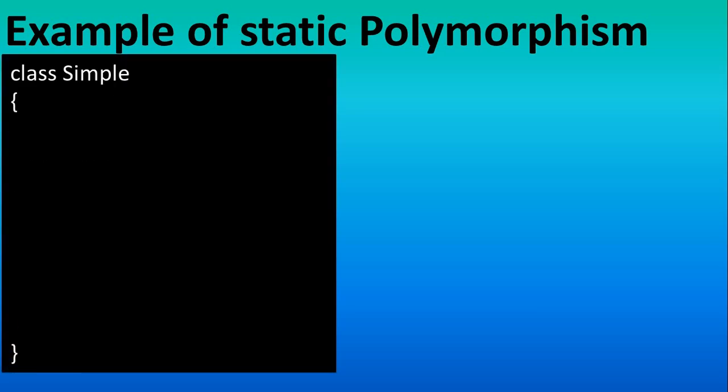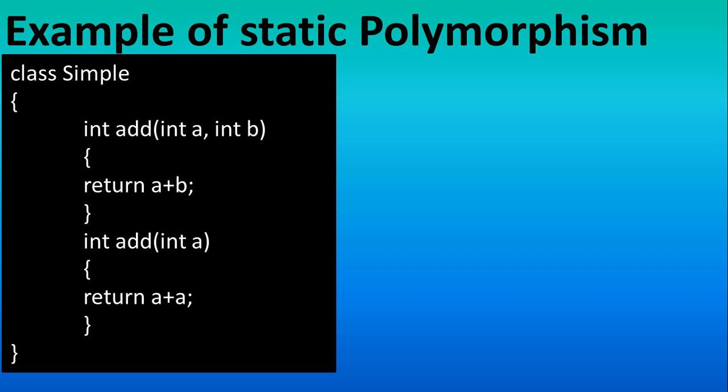We see the example of overloading. You take one class and inside it if we have two methods or more than two but their names are same, return types are same like integer but only their parameters are different - here we have two, here we have one, or either their data type should be different.